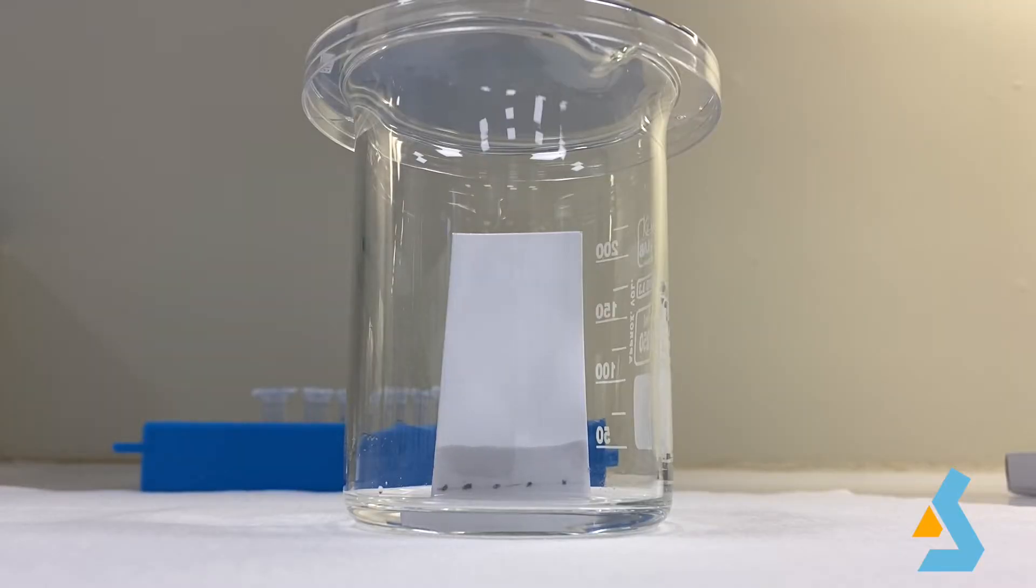Now, the solvent, which is the mobile phase, will begin to rise up the plate, which is the stationary phase. We will let the solvent rise up until there is 5-10 mm space at the top of the plate.